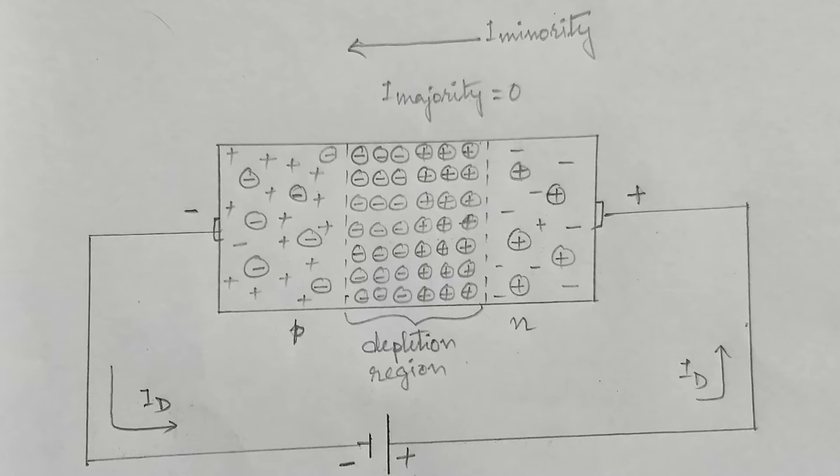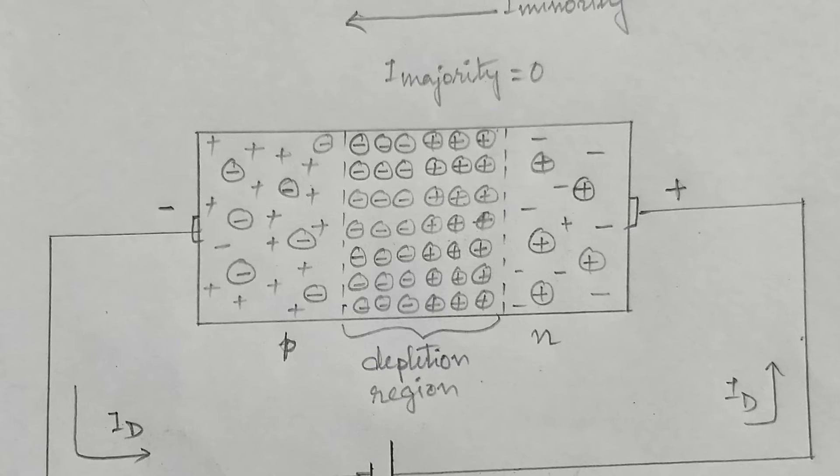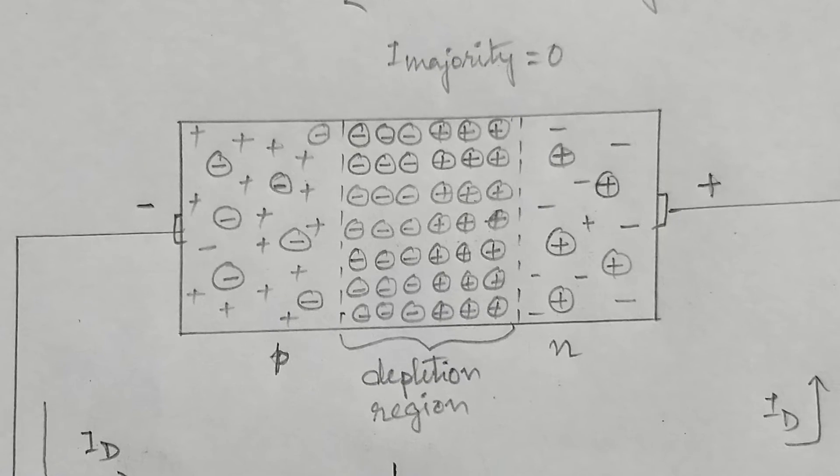This occurs because a strong electric field in the junction can disrupt the bonding forces within the atomic structure and generate carriers.